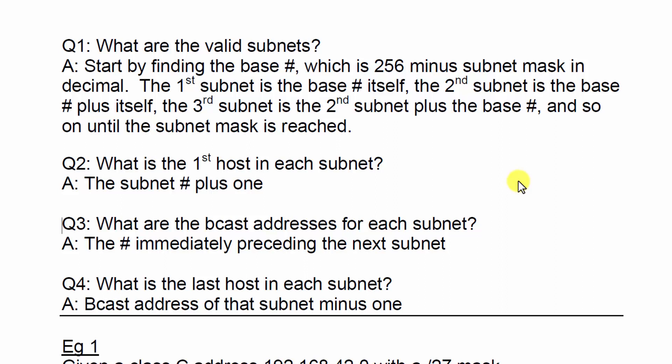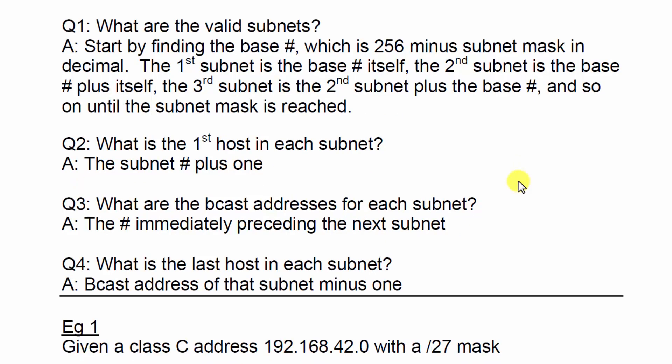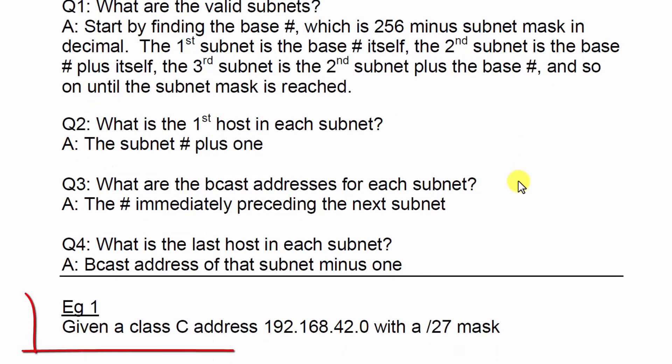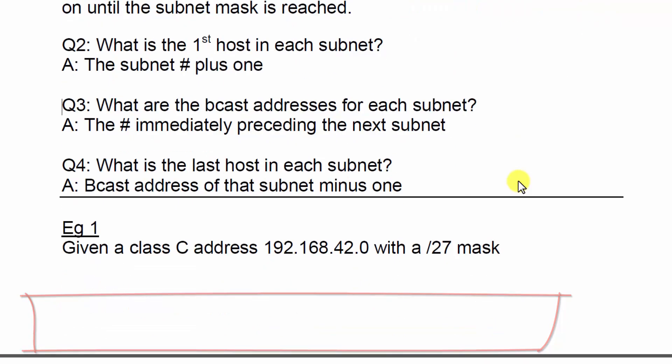What you're going to want to do is take some screen prints of this so you have all this memorized before you go into any exam. Now, we're going to give an example. Given a Class C address, 192.168.42.0, with a subnet mask of 27, let's answer all the questions.